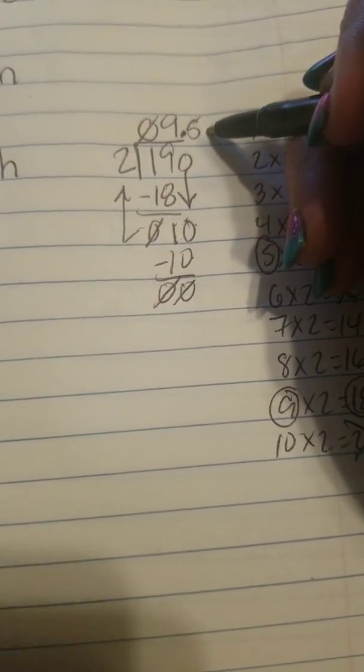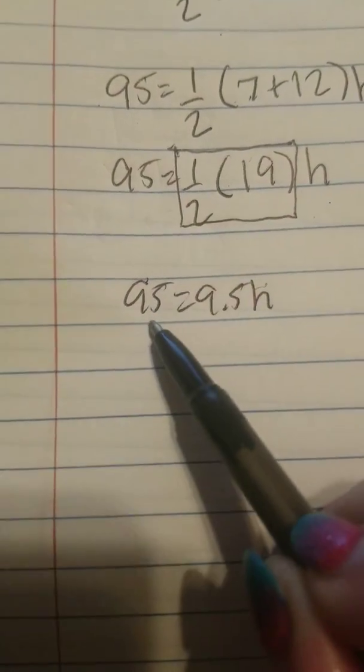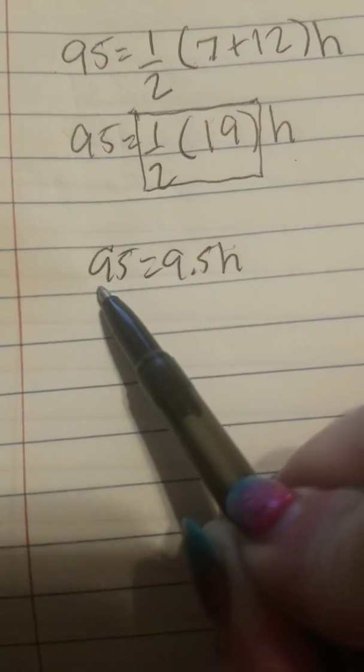So half of 19 is nine and a half. So 95 is nine and a half h. So nine and a half times something has to give me that 95. So instead of multiplying by nine and a half, I'm going to divide both sides of my equation by nine and a half.